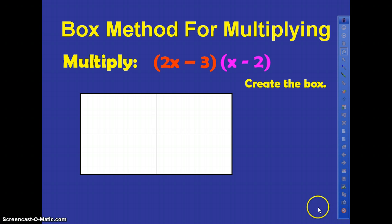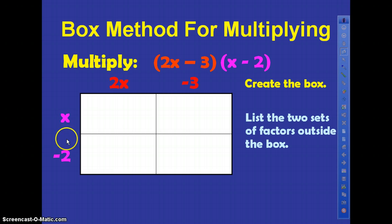We need a 2x2 box, or a box with four squares. Then you're going to list the two sets of factors outside the box like this. See, the 2x minus 3 goes here, or it can go down here—doesn't matter where you put it. The x minus 2, we're going to list the x and the minus 2. You can swap those two around; you're still going to get the same answer.